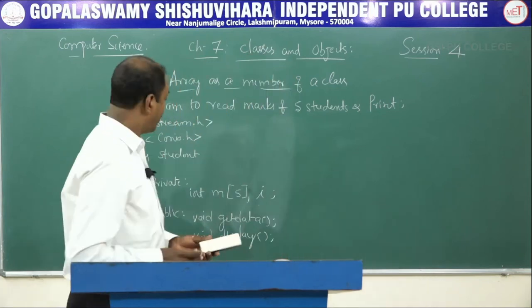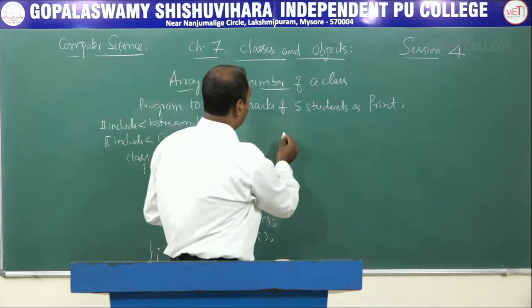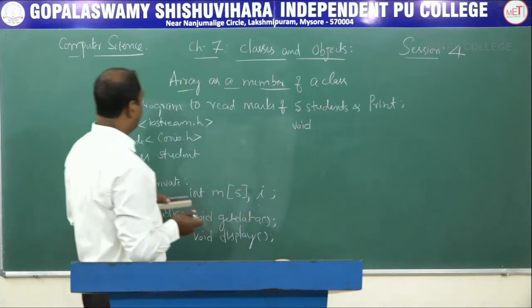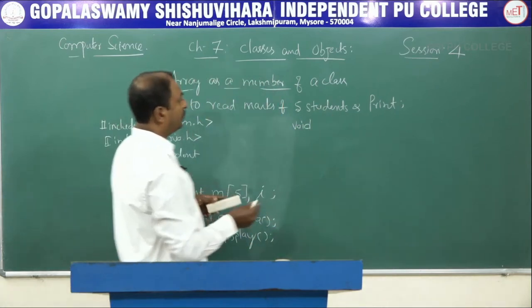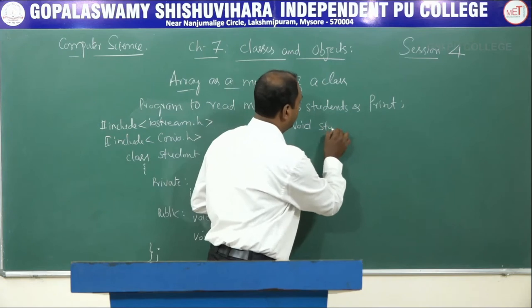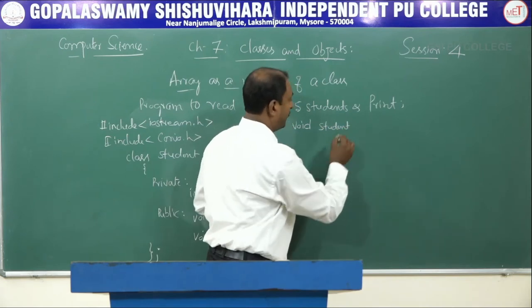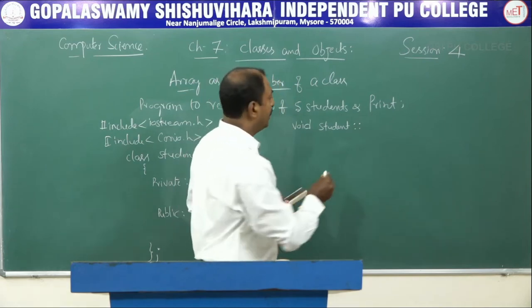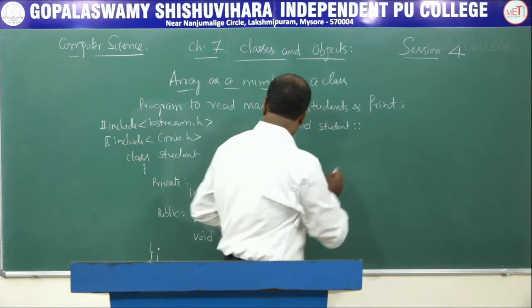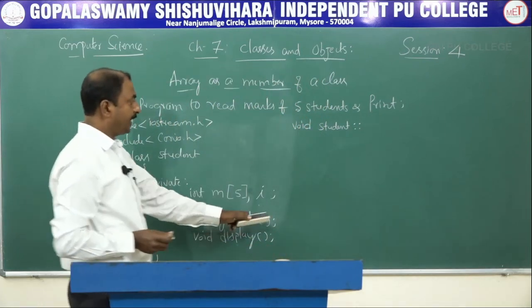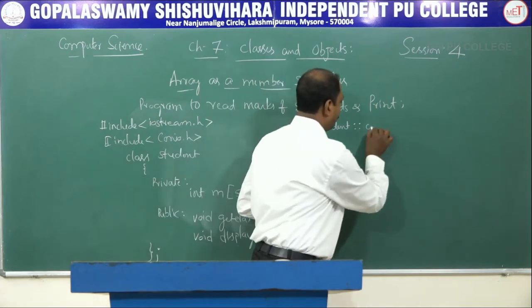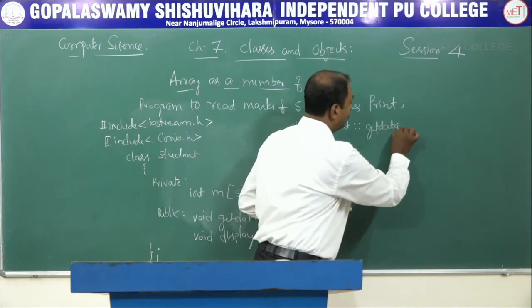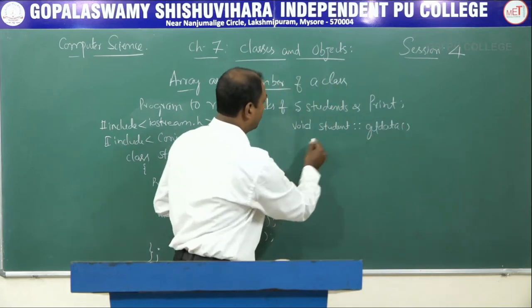We define the first function: void student::getdata. The class name is 'student', and we use the scope resolution operator followed by the function name 'getdata'. No semicolon here — this is the function definition.